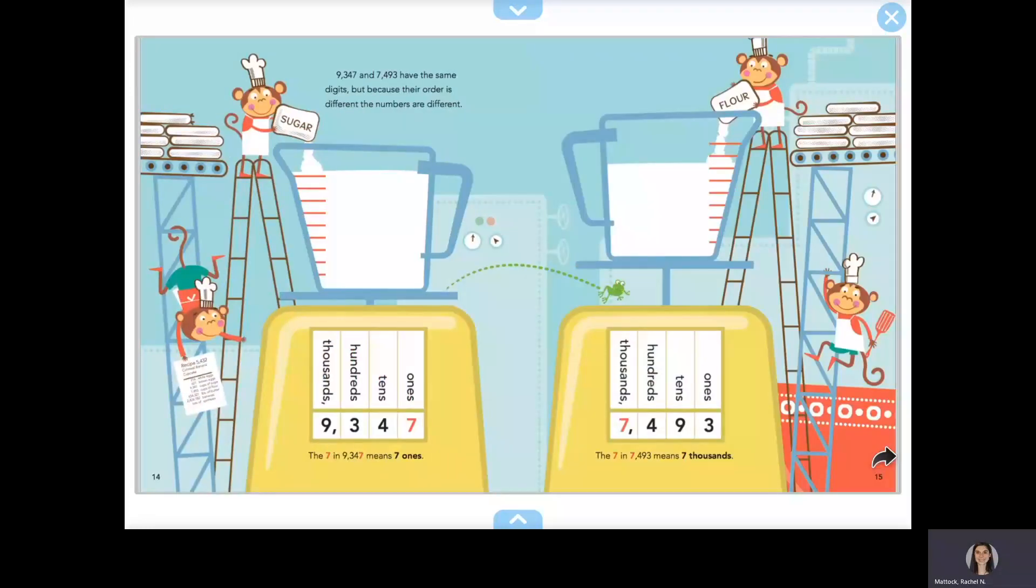9,347 and 7,493 have the same digits, but because their order is different, the numbers are different. The 7 in 9,347 means seven ones. The 7 in 7,493 means seven thousands.